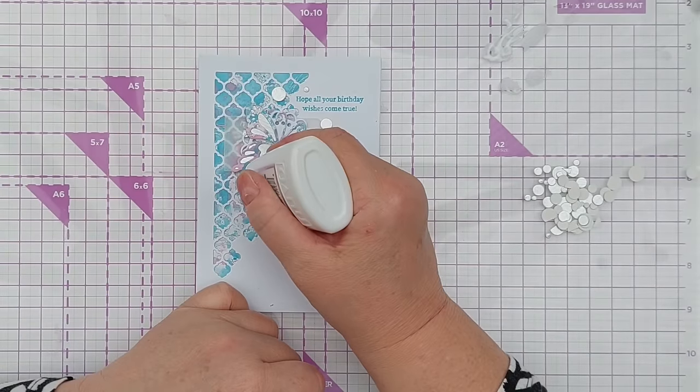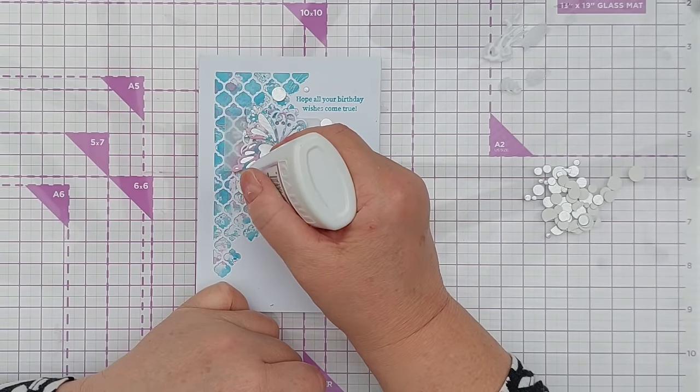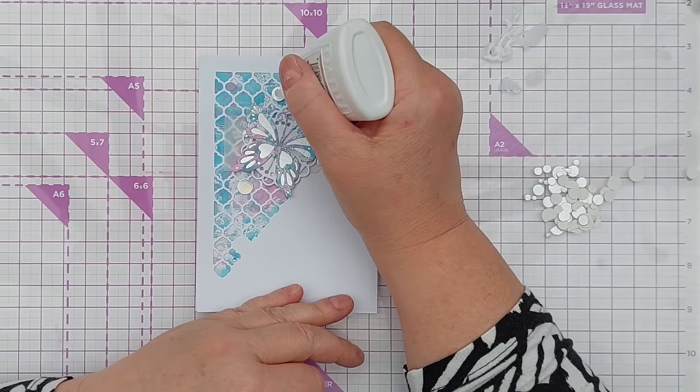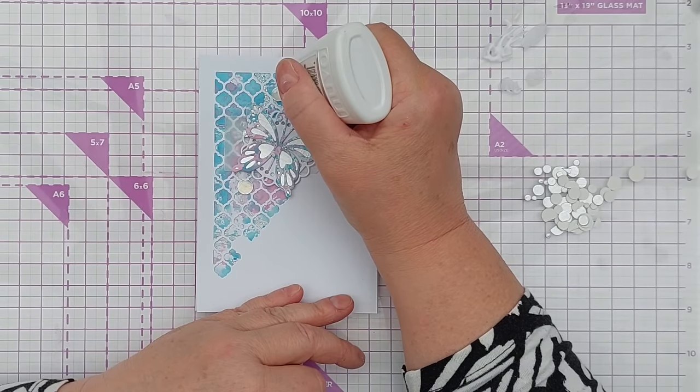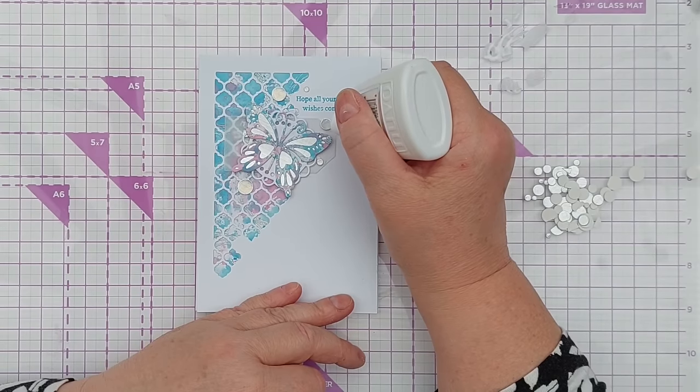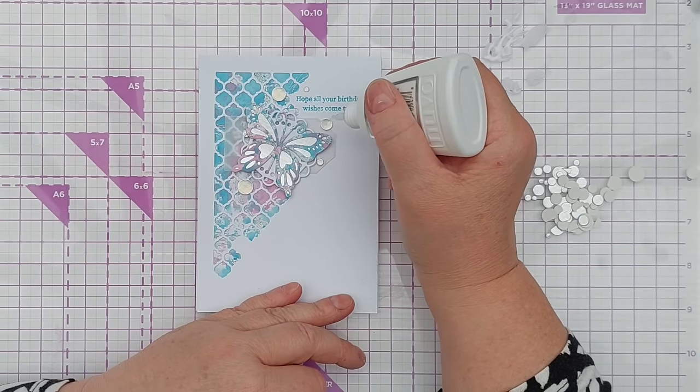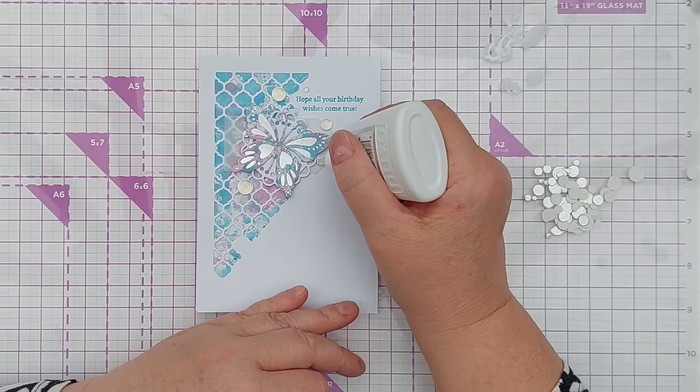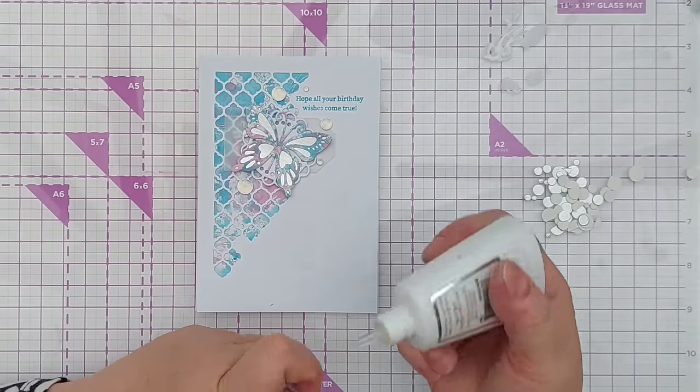Now for some crystal glaze. I'm just going to put some on and then use the nozzle like a paintbrush to coax it to the edge so I don't flood the whole thing. This should dry clear—it looks a bit yellow now but it will dry clear. You can use glossy accents for that as well.